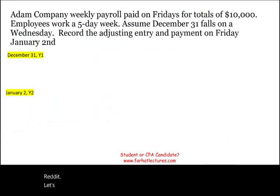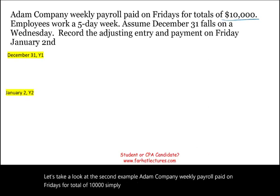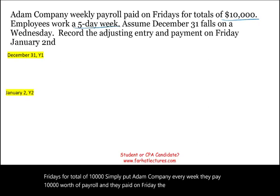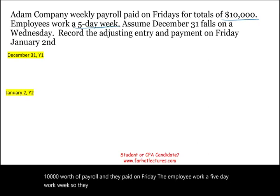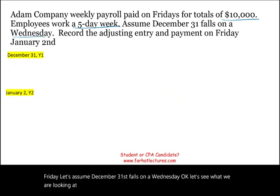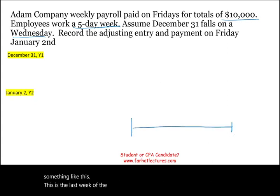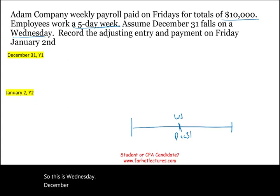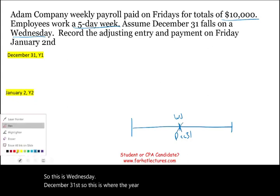Let's look at the second example. Adam Company's weekly payroll is paid on Fridays for a total of $10,000. The employees work a five-day work week, Monday through Friday, and get paid on Friday. Let's assume December 31st falls on a Wednesday — this is where the year ends.